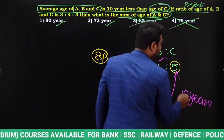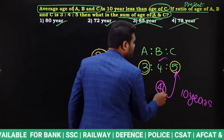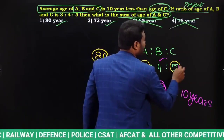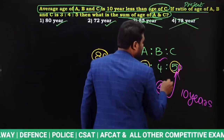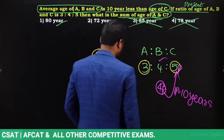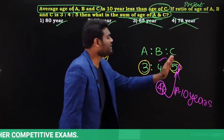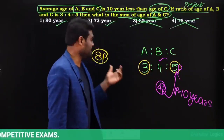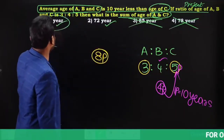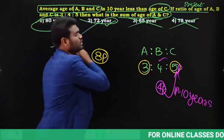Average of A, B, C in terms of parts is 4 parts. C's age in terms of parts is 5 parts. Difference is 1 part, and 1 part equals 10 years. Sum of ages of A and C is 8 parts. So 8 times 10 gives us 80 years. Therefore 72 is also eliminated and the answer is 80 years.